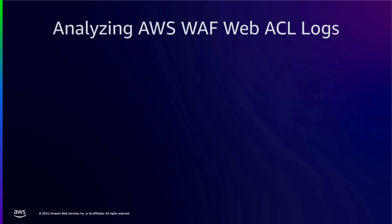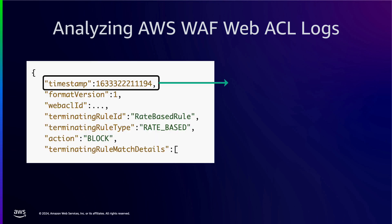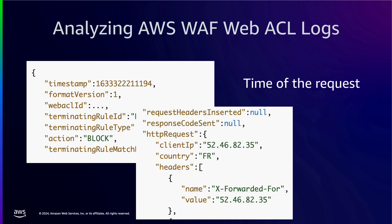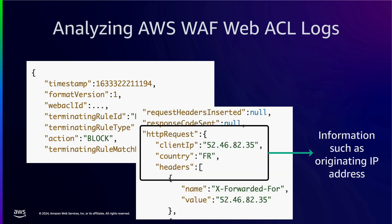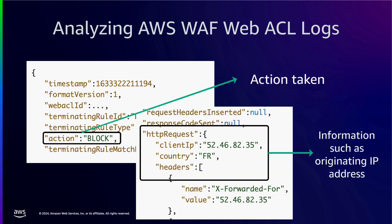AWS WAF logs include information about the traffic that is analyzed by your web ACL, such as the time that AWS WAF received the request from your AWS resource, detailed information about the request, and the action for the rule that each request matched.